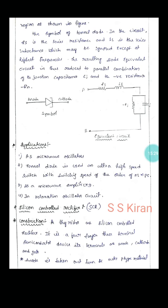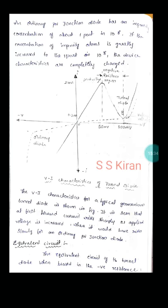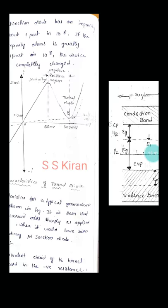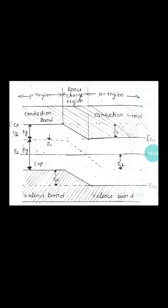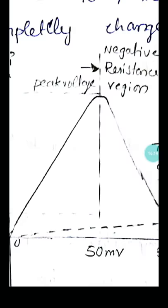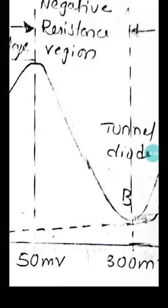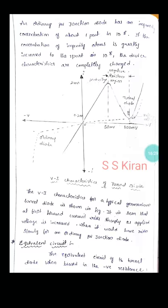The tunnel diode is also called the Esaki diode. It starts conduction as soon as the power supply is given. At one point it decreases. The best application of the tunnel diode is that it can be used as a relaxation oscillator circuit. When answering exam questions, you must explain using the energy band diagram — comparing the three regions: zero bias (less tunneling), peak voltage (large tunneling area), and valley voltage (little to no tunneling area, hence decreasing current). You must also draw the I-V characteristics diagram.